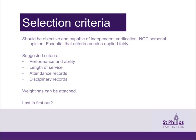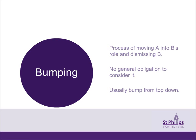Bumping is a redundancy-specific term. It is the process of moving a potentially redundant employee — call them A — into another role, and then dismissing the employee currently performing that role — call them B. It's still a redundancy dismissal, even if there's no actual or anticipated diminution in the requirements for employees to do B's work. But here it will be B, not A, who's being made redundant. There's no general obligation on an employer to consider bumping, but in some circumstances it may be unreasonable not to do so. Usually where it does take place, employees are bumped down — that is, senior employees are moved into lower-ranking employees' roles, and the lower-ranking employees are dismissed.